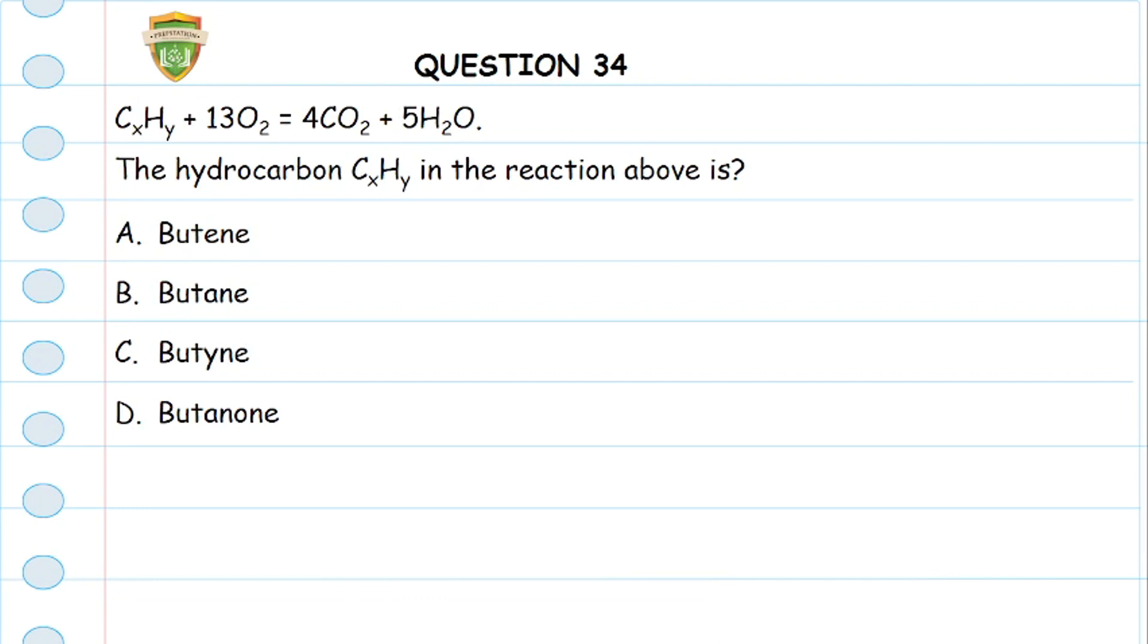When you look at carbon here, you can see there are four carbons, and this is the only carbon here. That means automatically this is C4, so our X is four. Now for hydrogen, five times two is ten, so this is 10. The hydrocarbon that is C4H10 is what we call butane, it is of the alkane functional group. So that is butane C4H10, option B.